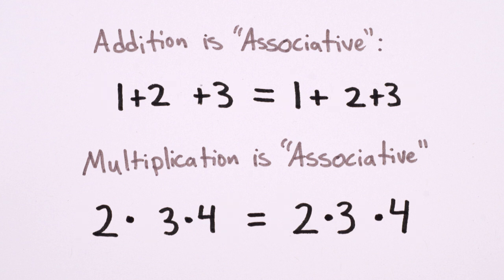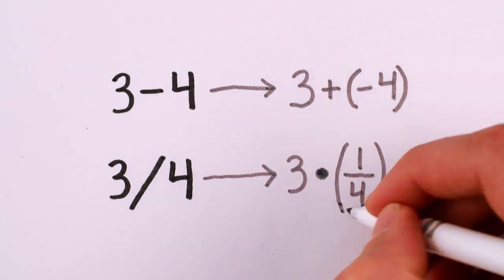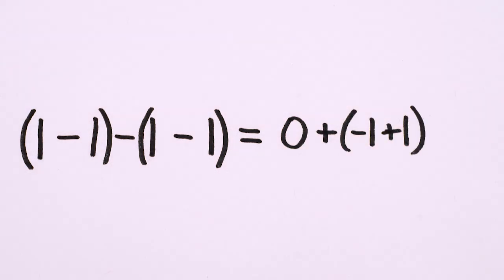But the point is that those parentheses are still there, still implied, just like how 3 minus 4 is secretly implying 3 plus negative 4, and 3 divided by 4 is really 3 times 1 fourth. But any time the result might be ambiguous, you really need to use parentheses. Then you can proceed in whatever order you want.